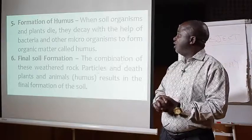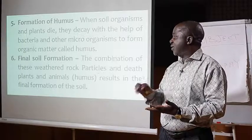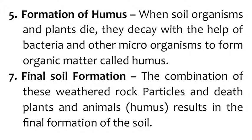Four, appearance of biological activities — due to bacteria and other soil organisms, plant life begins to appear in the soil, and increased activities of these organisms further promote the formation of soil. Five, formation of humus — when soil organisms and plants die, they decay with the help of bacteria and other microorganisms to form organic matter called humus. Six, final soil formation — the combination of weathered rock particles and dead plants and animals, which we call humus, results in the formation of soil.